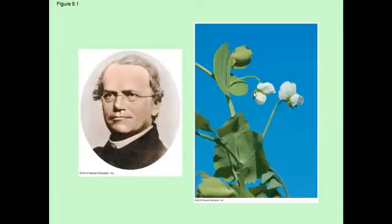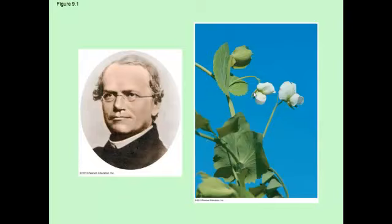Moving on to Mendel — he was a monk who did extensive research on peas. He spent a lot of time crossing, growing, and breeding peas. Why look at peas? Simply, they're easy to grow, they come in many readily distinguishable varieties, and are easily manipulated. They can self-fertilize, meaning they can fertilize themselves, or you can manipulate the anthers and stamen to control the fertilization that occurs.